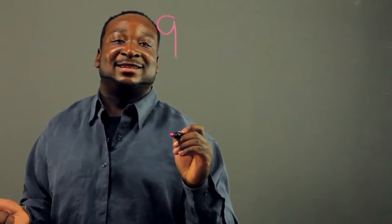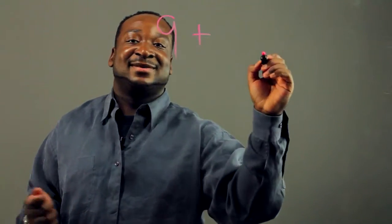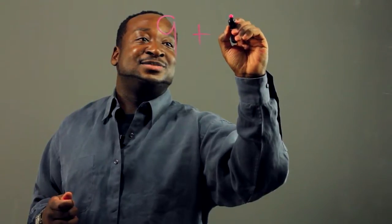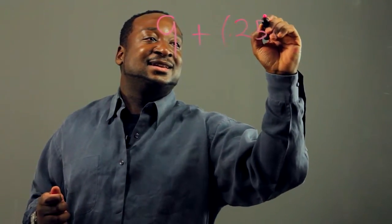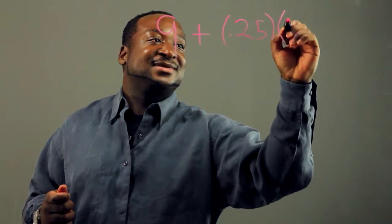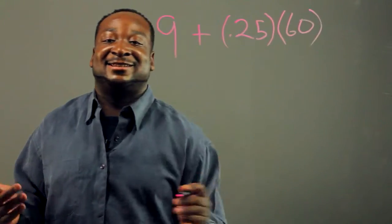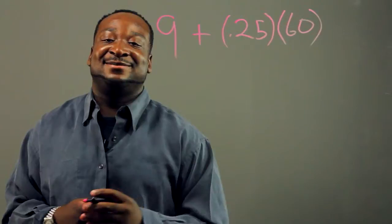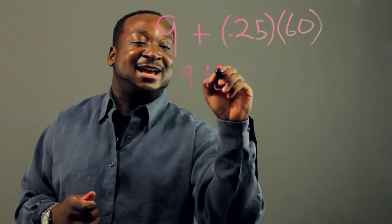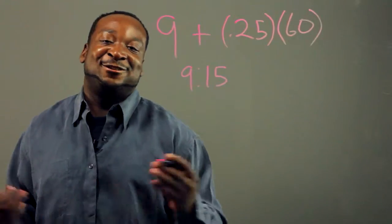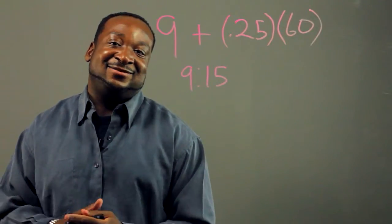All right. So he said a quarter after nine. So it's nine plus a quarter percent of an hour. So a quarter, 25 percent of 60 minutes. So in actuality, the time he was really trying to tell me that it was 9:15. He was using math and he didn't even know it.